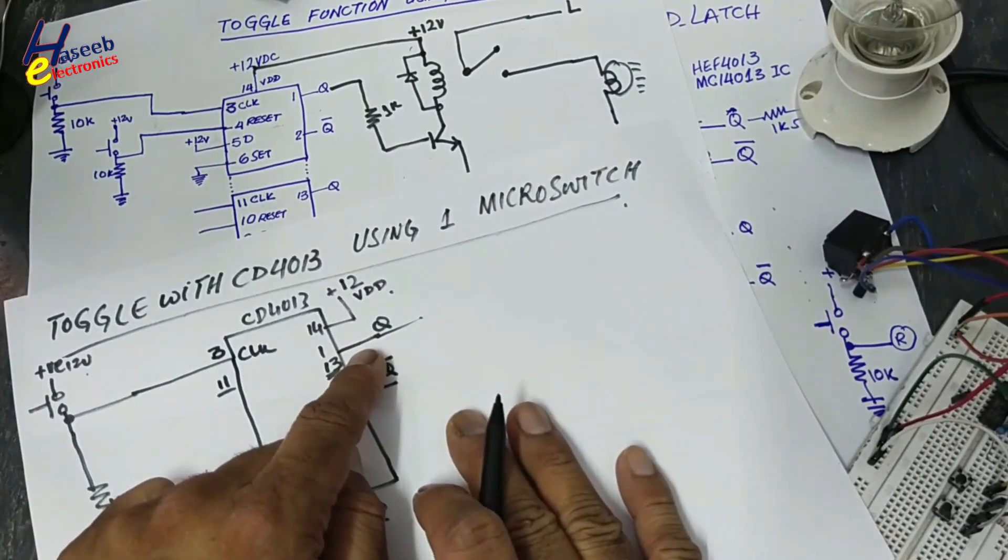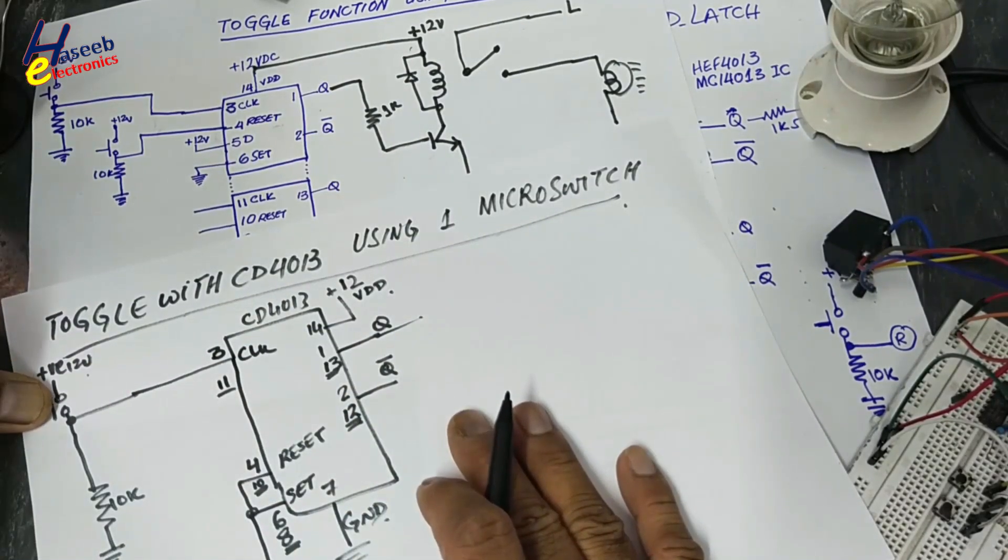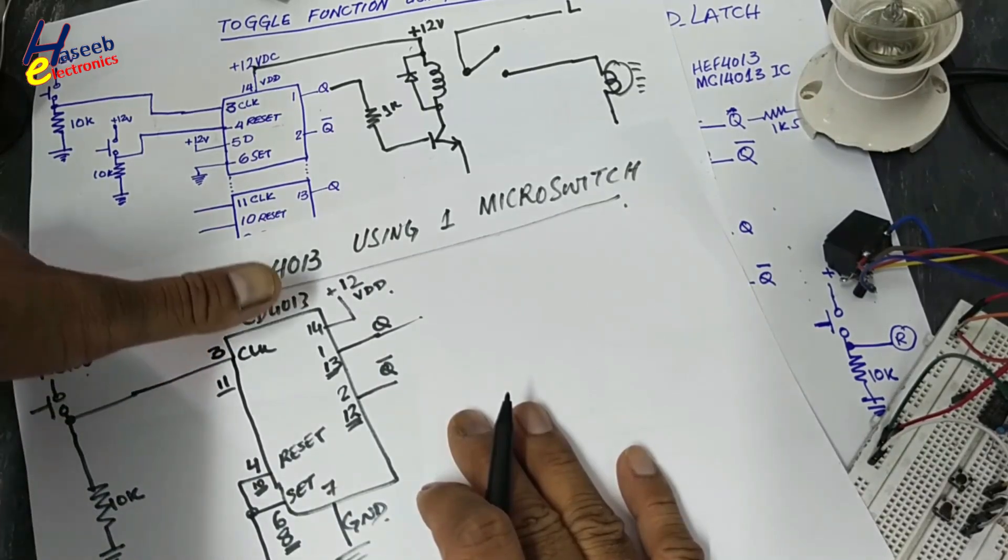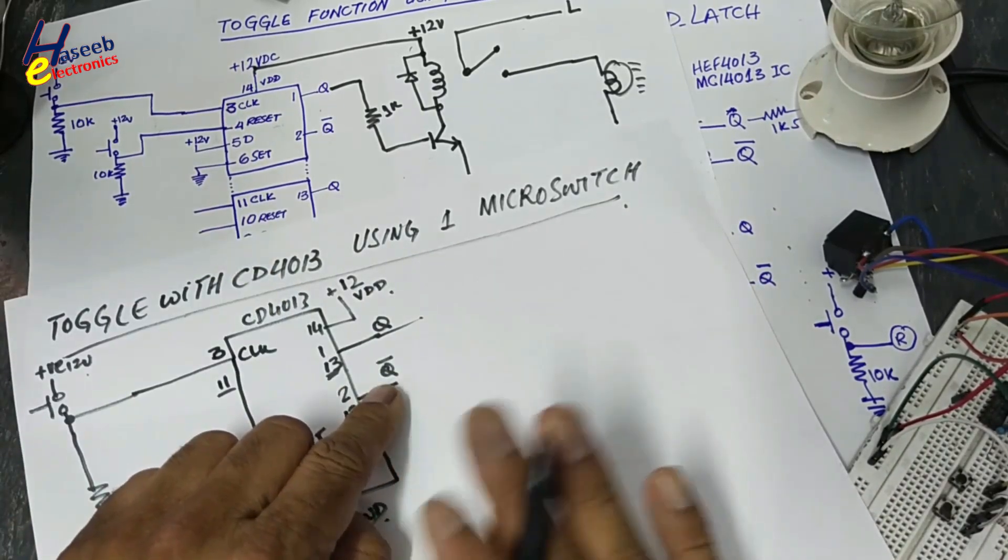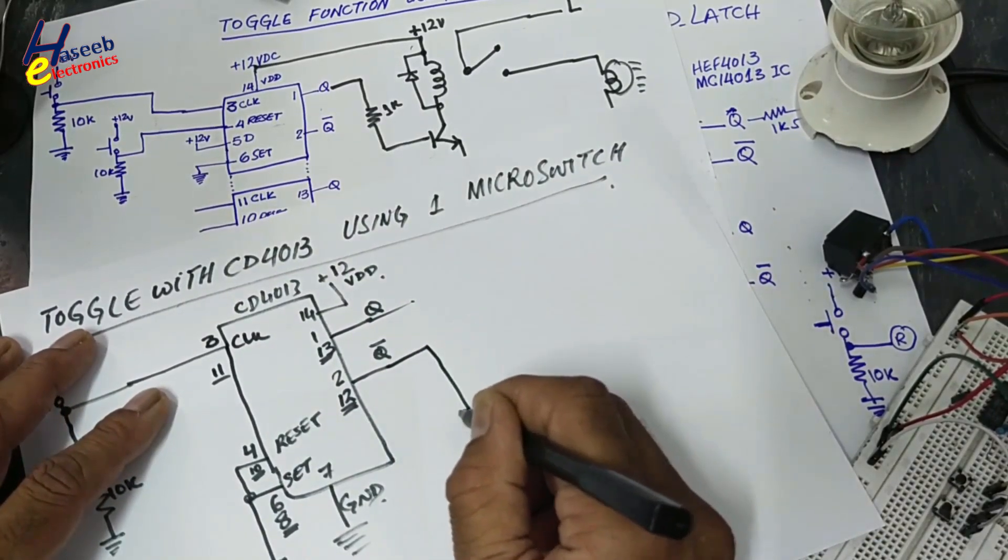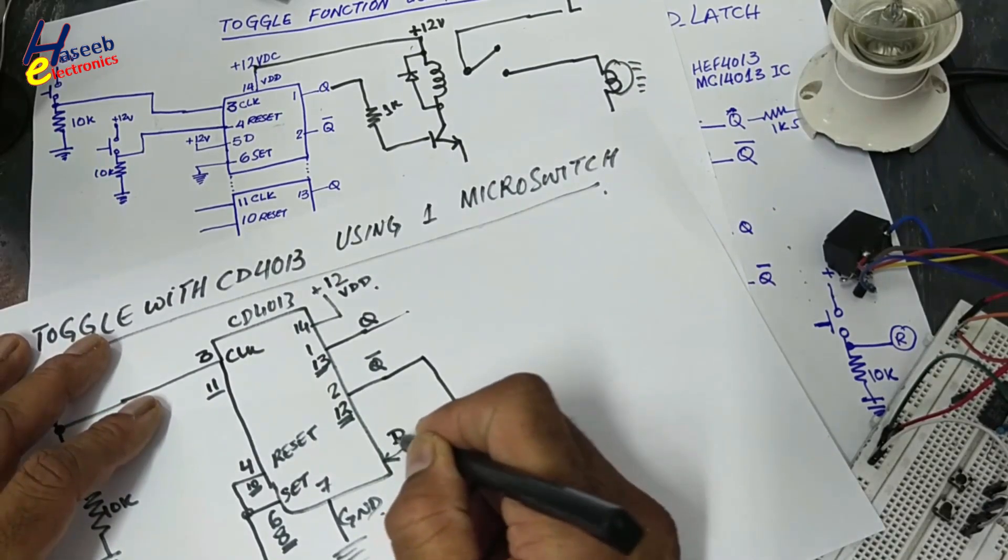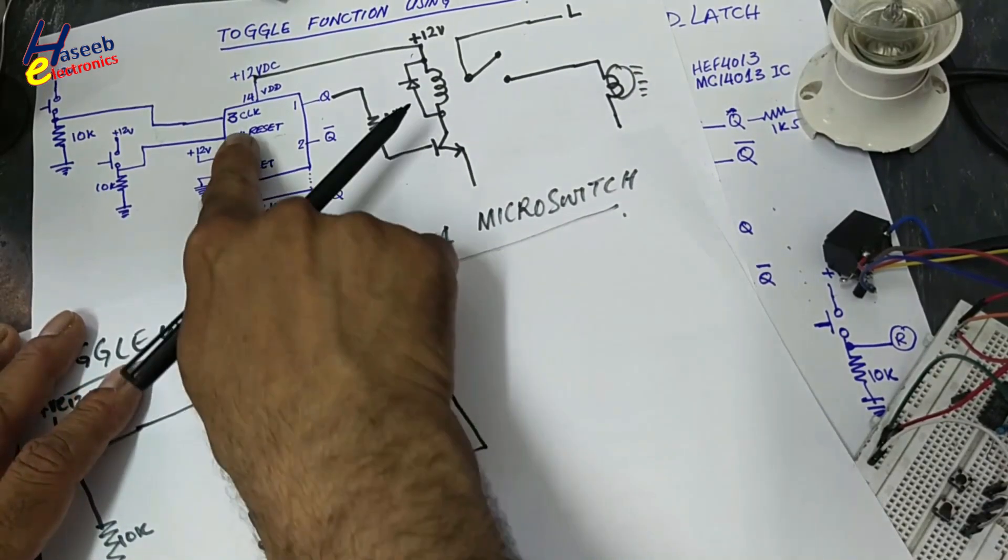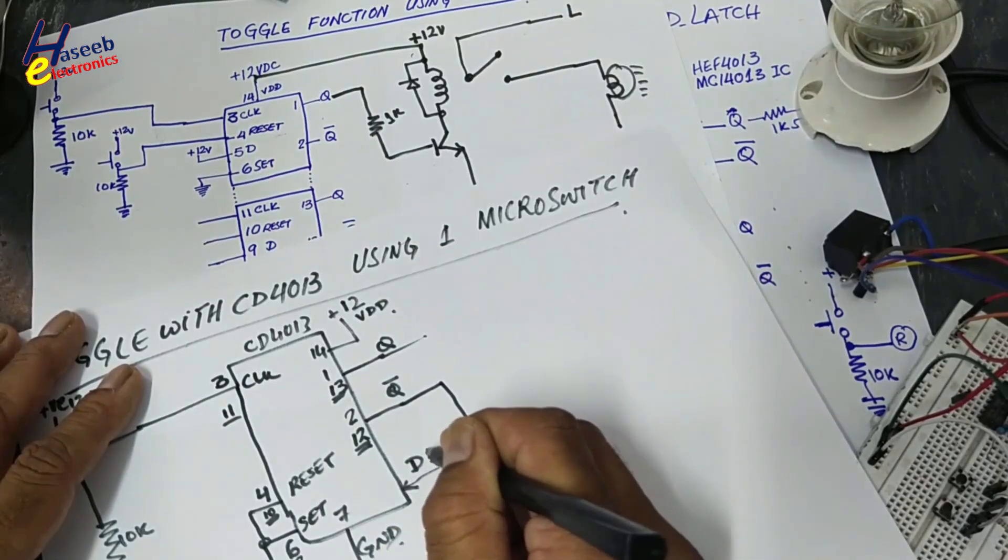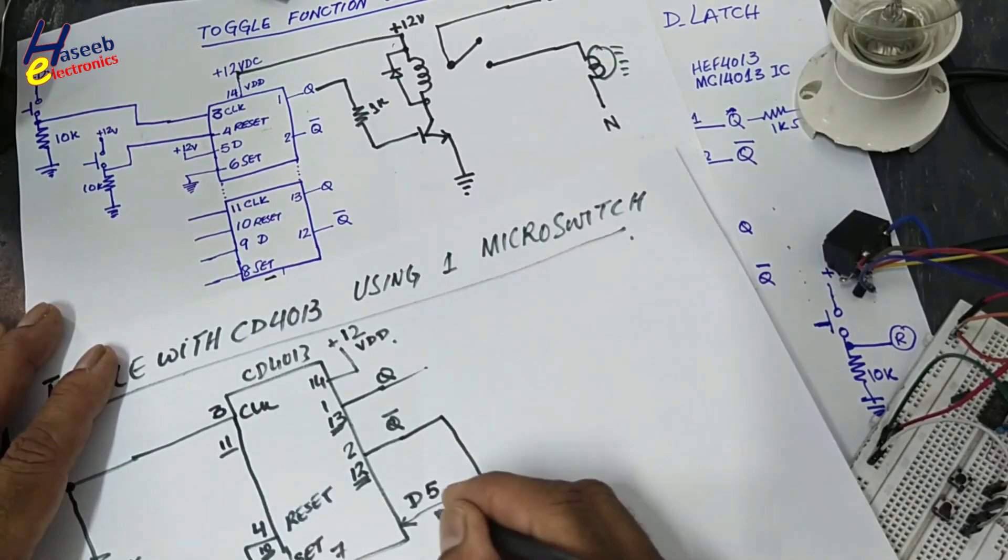If Q is high, Q bar will low. Let's suppose at first toggle, first switch. If Q is high, Q bar is inverted output, complement output. We will feed this Q bar to D input. In our case, D is pin number 5. If you are using second channel, pin 9 will D input.